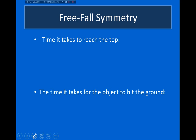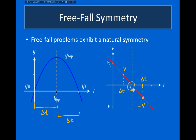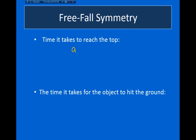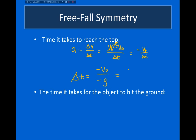Using this symmetry, we can come up with additional formulas useful for free fall. To find the time it takes for the object to reach the top of its trajectory, note that at the top the velocity is zero — the object is momentarily motionless before accelerating back down. Using a = delta_v / delta_t, with v_final = 0, we get delta t = −v_naught / a = v_naught / g. The total time to go up and return to the initial height is therefore 2·v_naught / g.